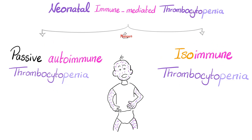Since it is thrombocytopenia, we will see superficial bleeding — skin and mucous membrane bleeding. Skin manifestations include petechiae, purpura, and ecchymosis. Mucous membrane bleeding includes bleeding from the gum, epistaxis, etc.